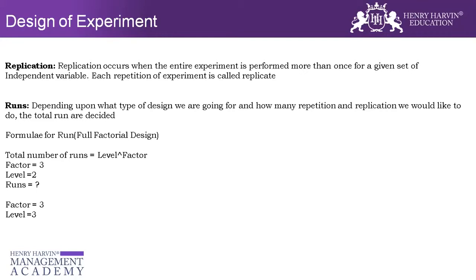Can we have different levels for each factor? For example, factor one has low and high, while factor two has low, medium, and high. The answer is yes — Minitab gives us an opportunity to do that. It is not compulsory that each factor has the same number of levels. Factor one can have two levels, factor two can have three levels, factor three can have four levels. The level must be at least two; it should not be less than that.